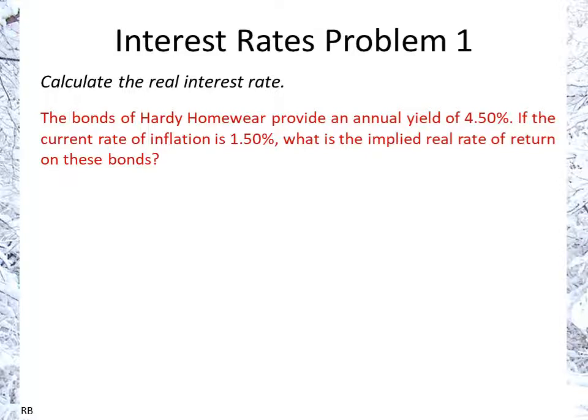This is an application of the Fisher Effect, which talks about what is the real — in other words, what are you effectively getting as a return. For example, if we have a yield of 4.5% but inflation were also 4.5%, then effectively you're getting a 0% return, because you're gaining 4.5% but then everything after a year costs 4.5% more.